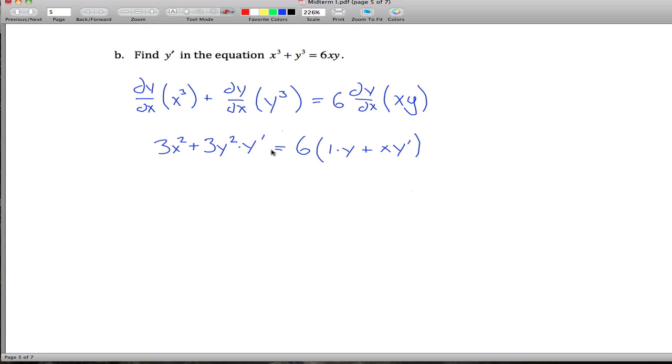And now all we have to do is solve this thing for y prime. 3x squared plus 3y squared y prime equals, we can distribute this 6 through, so we got 6y plus 6xy prime.